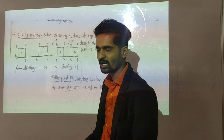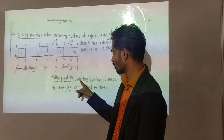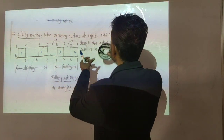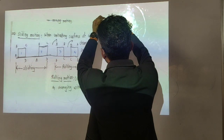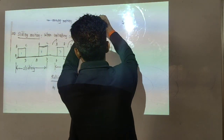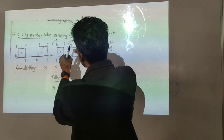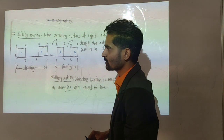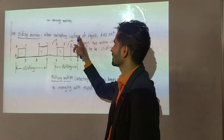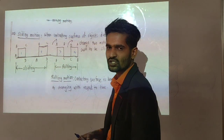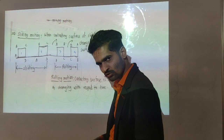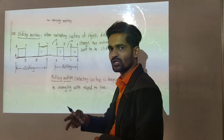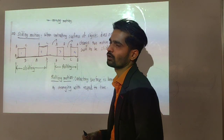In sliding motion, the contacting surface does not change. In rotational motion, the contacting surface keeps continuously changing. This disc, when rolling or performing rotational motion, the contacting surface moves and changes. But when the object is sliding, the contacting surface remains fixed. So sliding motion means whenever the contacting surface does not change; rotating motion means the contacting surface keeps continuously changing.